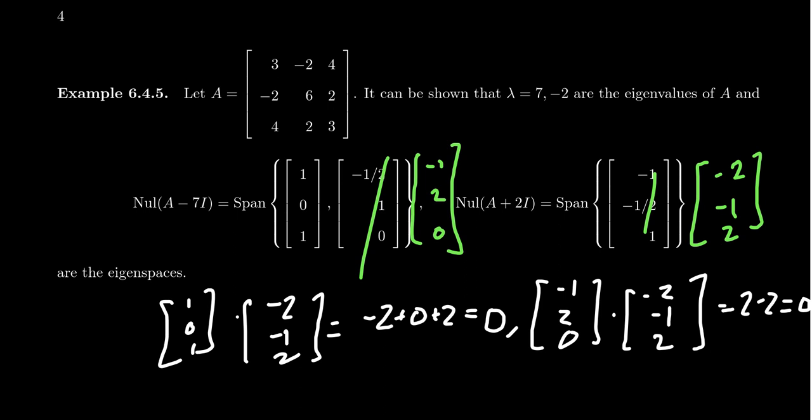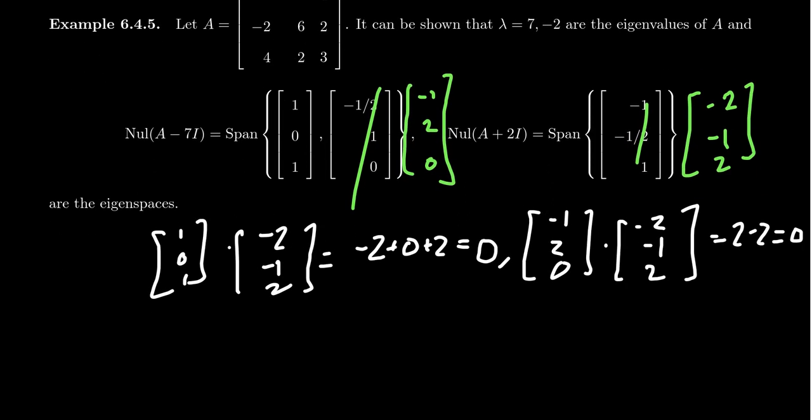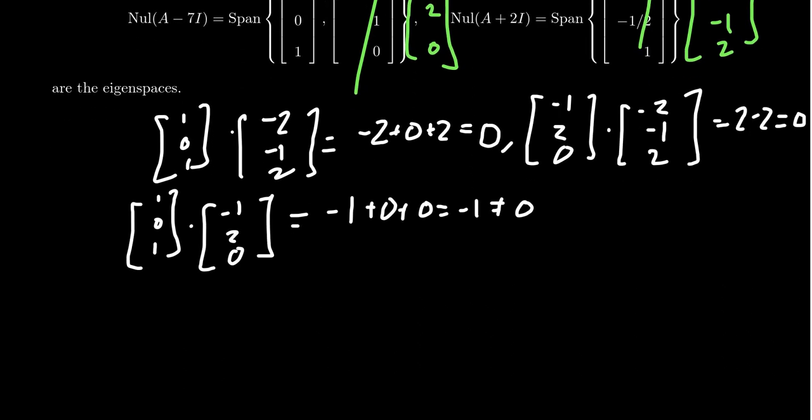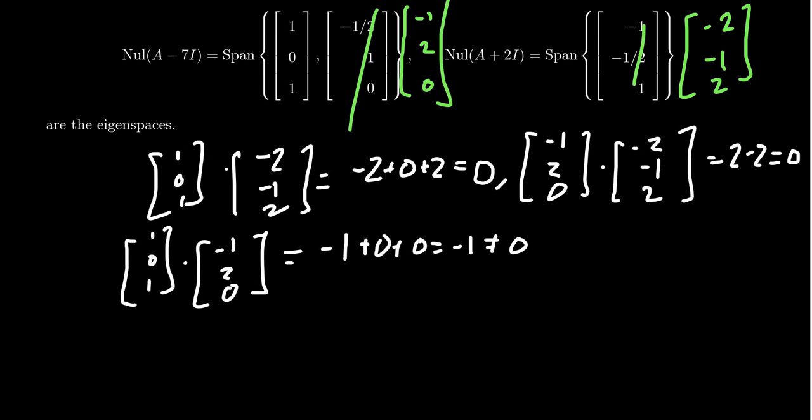But we don't have the situation where if you take the vectors from the 7 space, if you take their dot product, you don't see 0 in that situation. So we get 1, 0, 1, and you dot that with negative 1, 2, 0. You'll see this time you get negative 1 plus 0 plus 0, which is negative 1, which is not 0. So the basis for the 7 eigenspace is not orthogonal, but we can apply the Gram-Schmidt process to make it orthogonal.